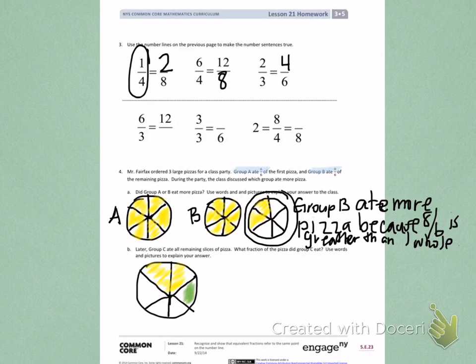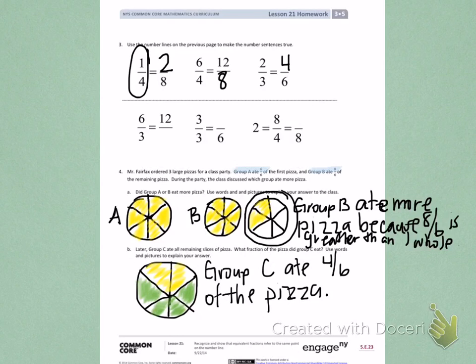That tells me that group C ate 1 sixth, 2 sixths, 3 sixths, 4 sixths. Group C ate 4 sixths of the pizza. The reason it's 4 sixths and not 12 sixths is we changed the whole. This was the whole before. Now we made the whole smaller.